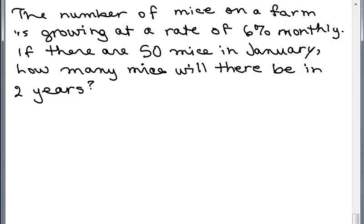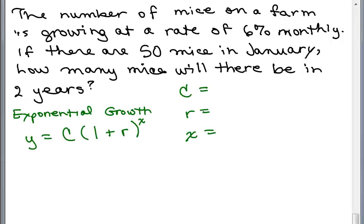Okay, so this is a growth problem because we see that the mice are growing, so we want to use that equation. Here we have the exponential growth equation and C represents the original number. In this case, that would be 50 mice.